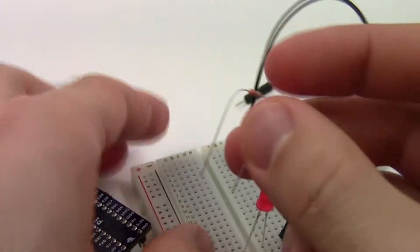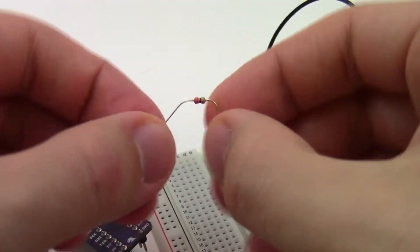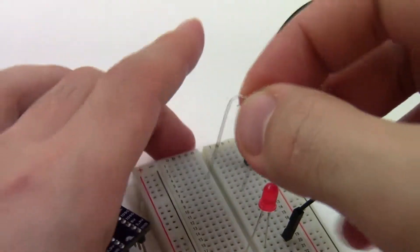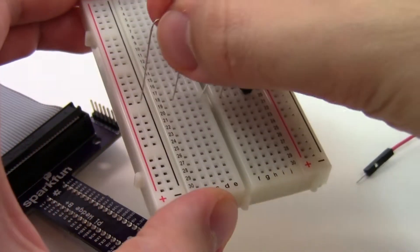You can take the legs of the resistor that are flexible, initially they start out straight like this, but you can bend them down, and also press those into the breadboard.